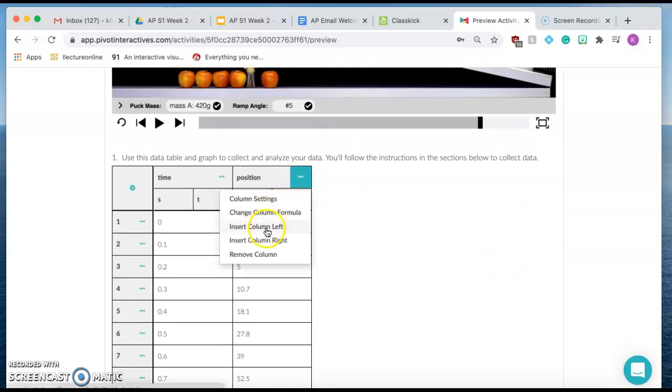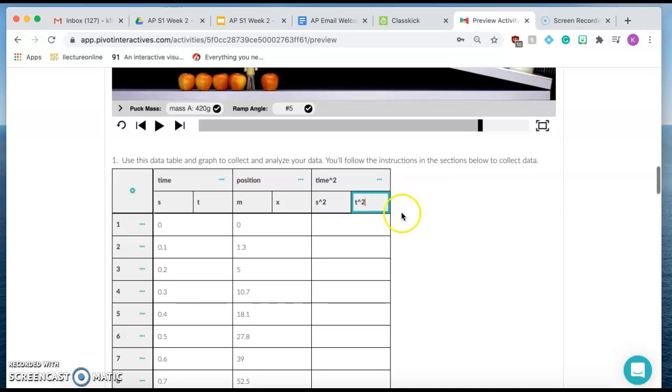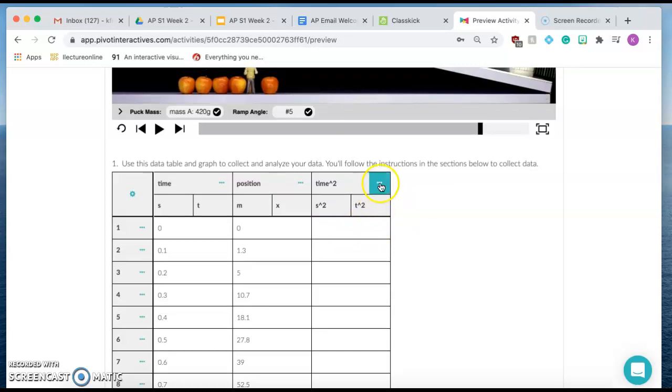All right, so what you're going to want to do is you want to insert a new column, okay? And this one's going to be called time squared, okay? So the units would be second squared and the variable would be t squared, okay? And hopefully, we're going to go over this actually in class, okay?